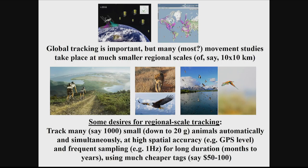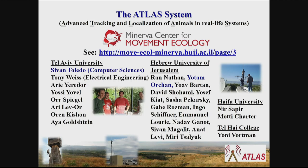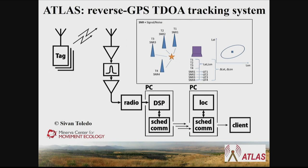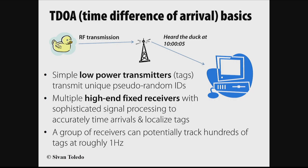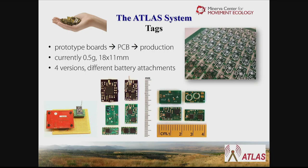This sounds impossible — too greedy — but it is actually doable. It depends on recruiting people like Sevan Toledo from Computer Science at Tel Aviv, who developed the Atlas system together with the Minerva Center for Movement Ecology, involving people from four universities in Israel. The Atlas system is a reverse GPS system. Instead of the tag calculating its position by communicating with satellites, the base stations read the differences in time-of-arrivals and make the calculation on the system side. This allows the tag to be very small — as small as half a gram.